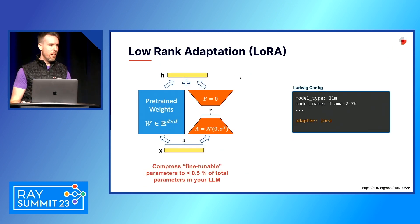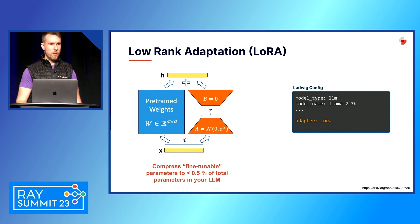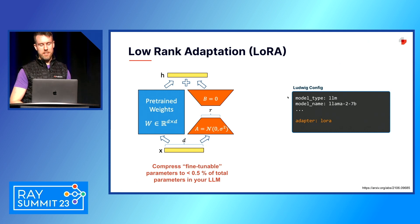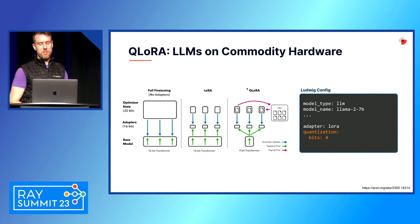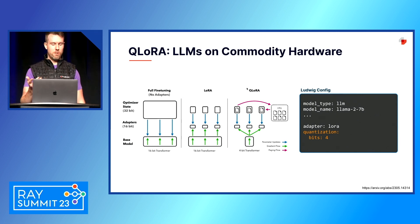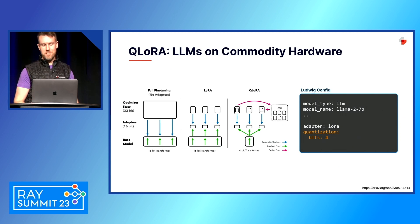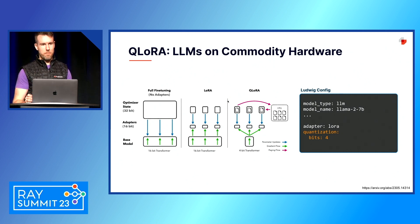A few key techniques are natively integrated into the system. Low rank adaptation (LoRA) is very popular for fine tuning without updating all the model weights simultaneously, and we enable it with a single parameter: just say 'adapter equals LoRA' and you're good to go. Similarly, for quantization-aware training with QLoRA, you just say 'quantization bits equals four,' and under the hood Ludwig handles the complex mixed precision training process without requiring you to think about the implementation details.